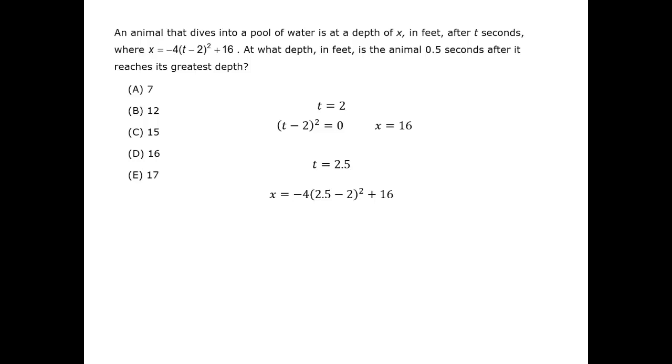Subtracting 5 halves minus 2 gives us 1 half, and we can square that quantity to get 1 fourth. The fours cancel, giving us minus 1 plus 16 equals 15.